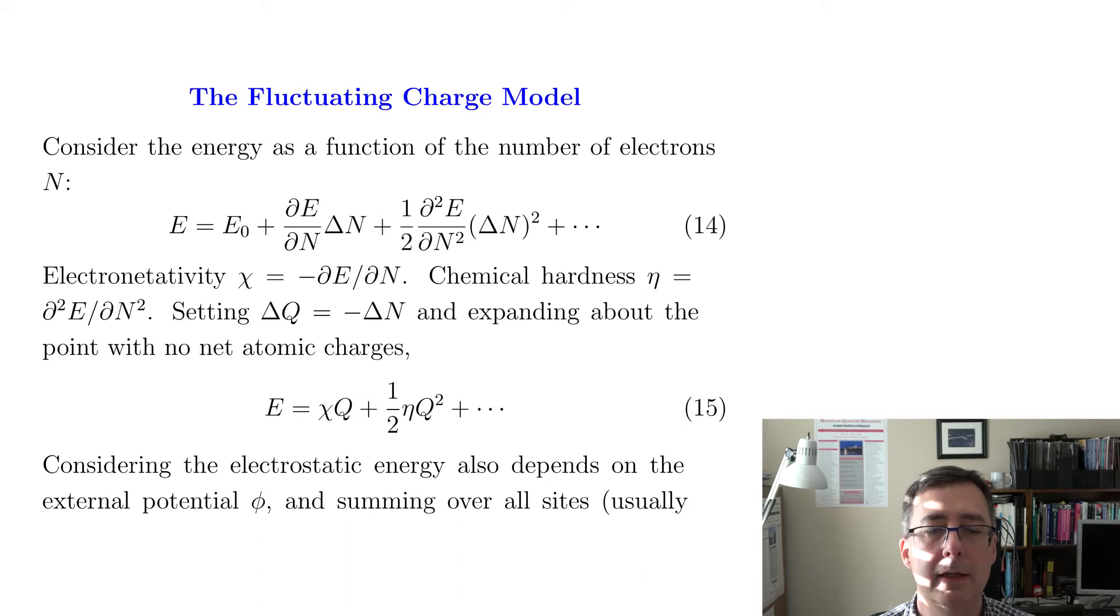The electronegativity can be associated with delta E delta n. And the so-called chemical hardness eta can be associated with that second derivative term. And then accounting for the fact that we're talking about moving electrons, and electrons have a negative charge, we'll set delta Q equals delta n times negative one. And then we'll rewrite equation 14 and get equation 15, which is similar in concept.